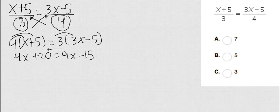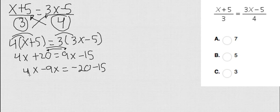Now we're going to bring all the letters to the left and the numbers to the right. Don't forget, anytime you switch, the letters are going to switch signs and the numbers are going to switch signs as well. So I'm going to do 4x minus 9x, and this 20 is going to go as negative 20 minus 15. So 4x minus 9x is negative 5x, equals negative 20 minus 15, which is negative 35.